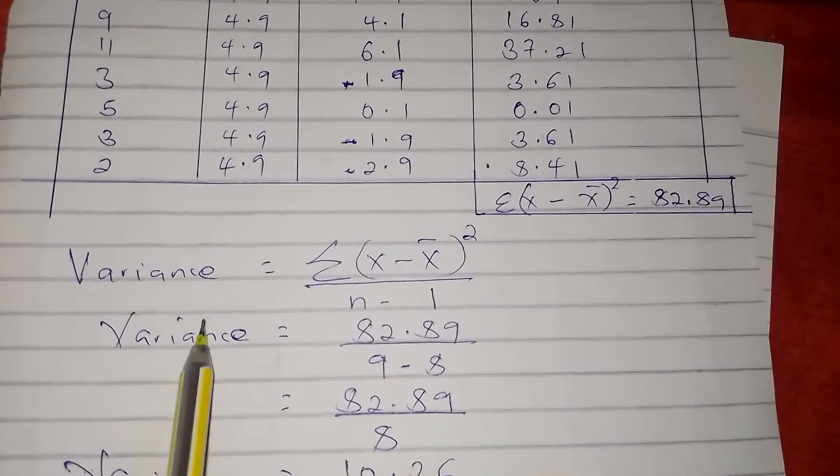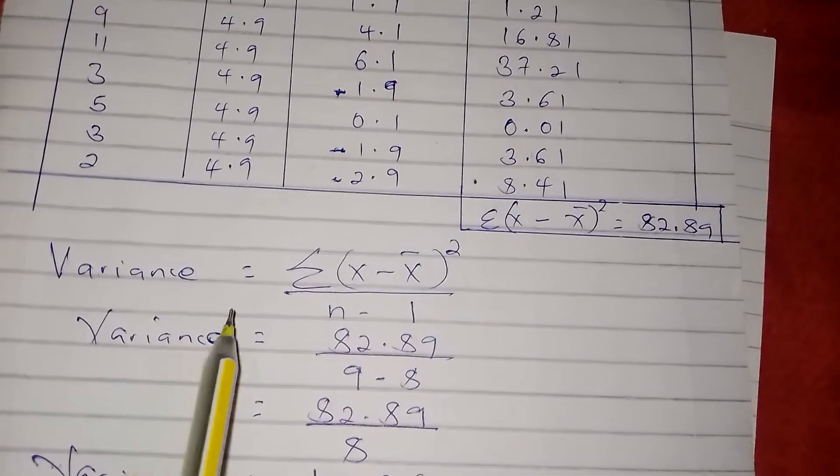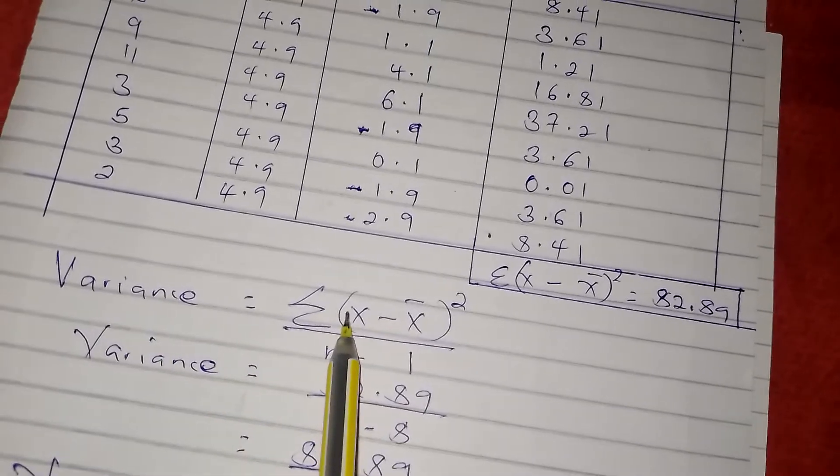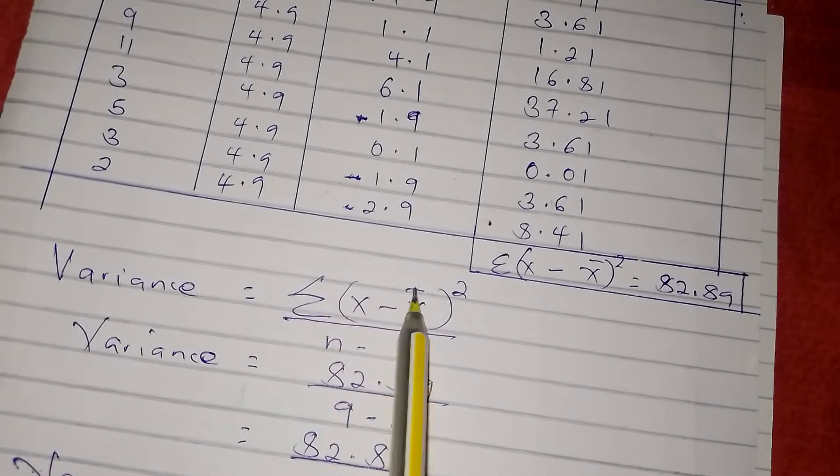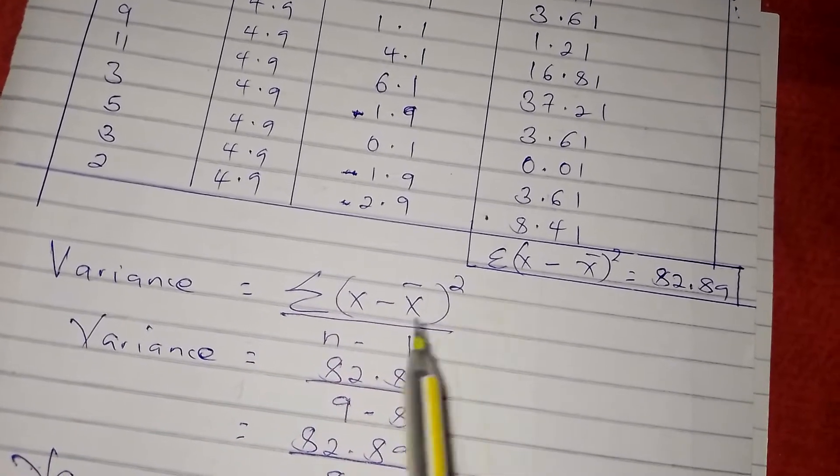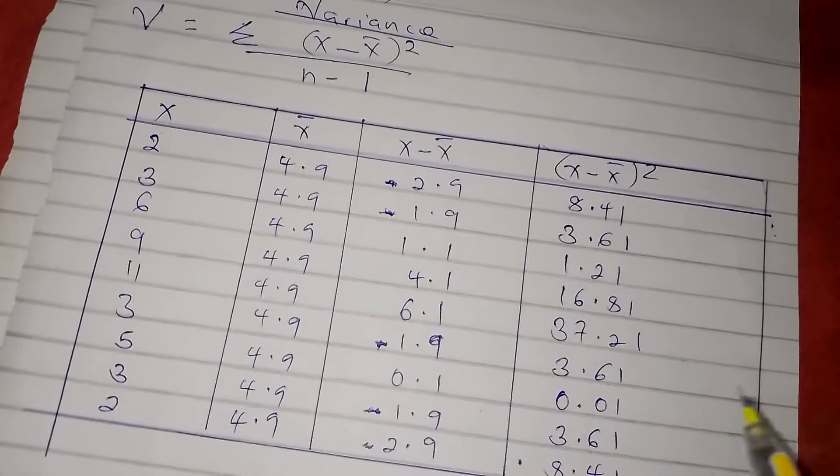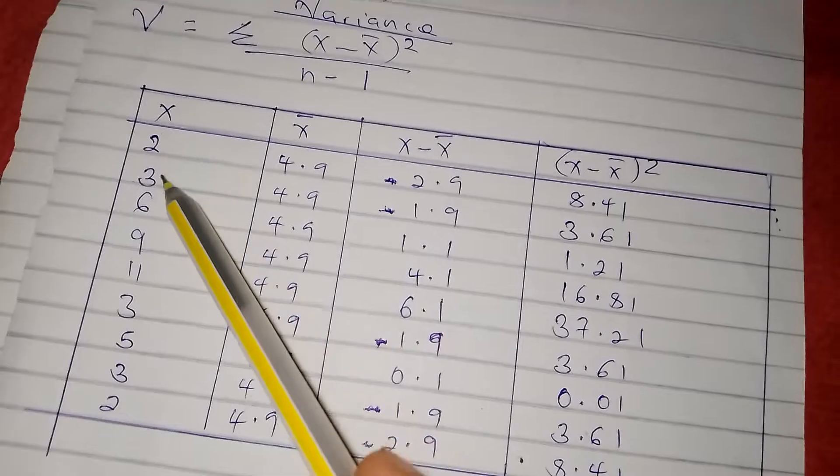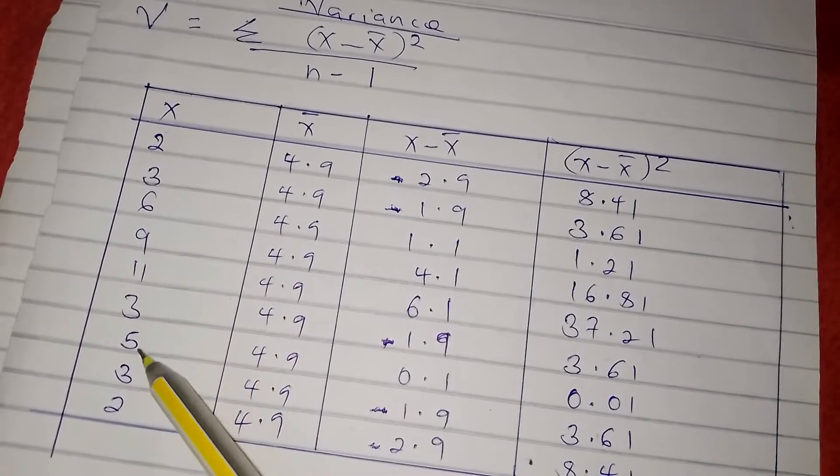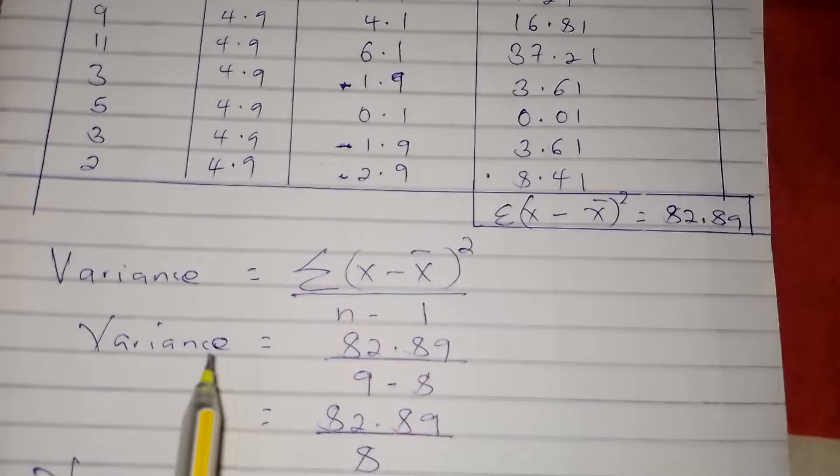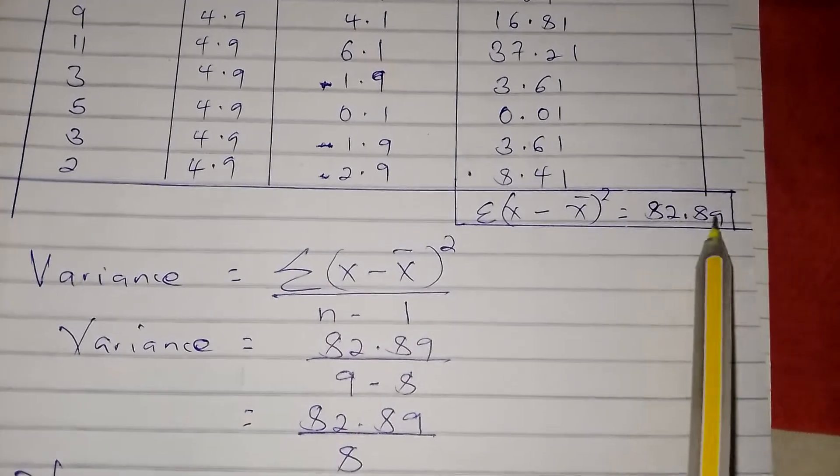After that you get the summation Σ(x - x̄)², which is 82.89. You add all these. The next thing we do is substitute in our formula: variance = Σ(x - x̄)² / (n - 1).